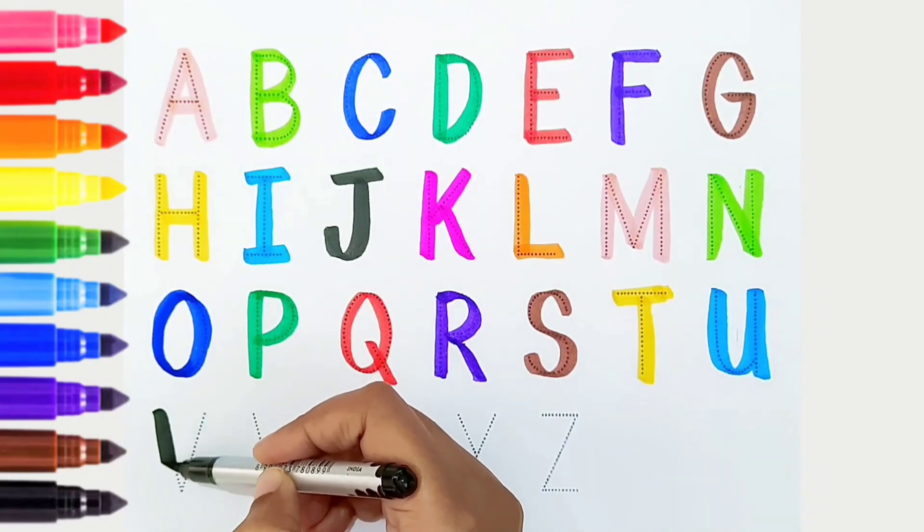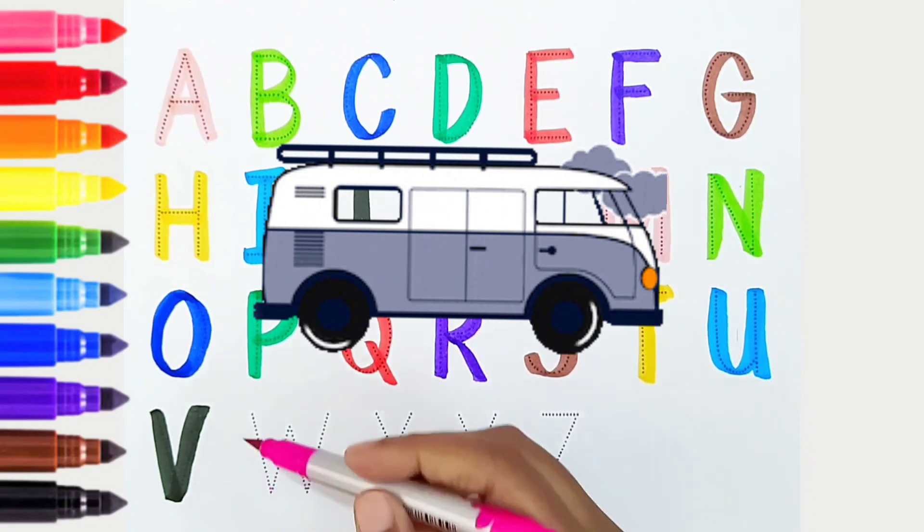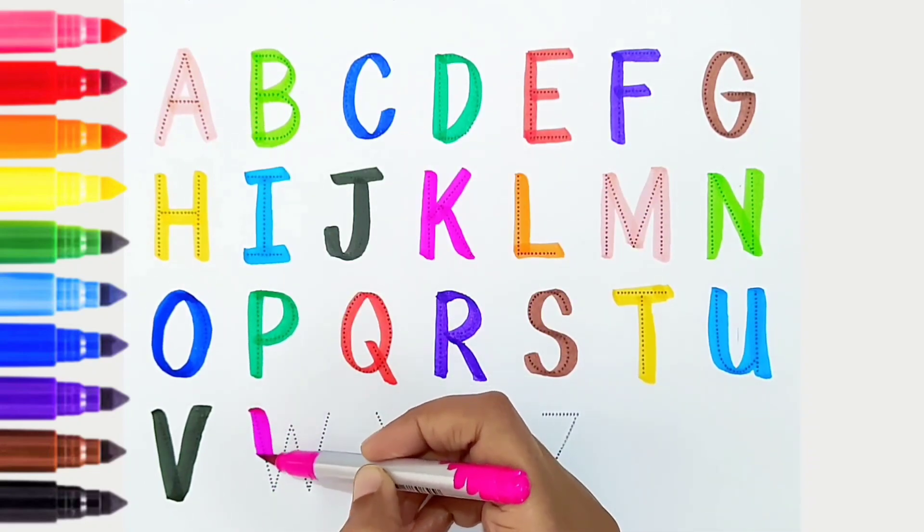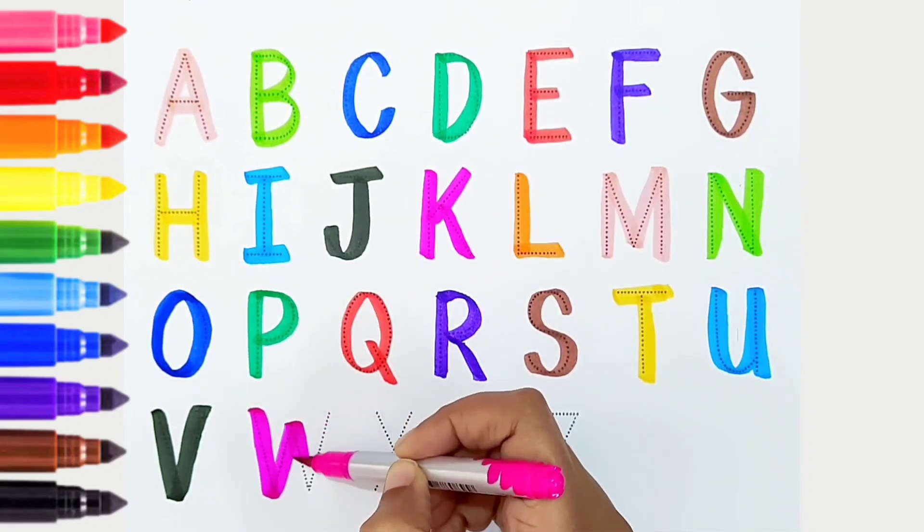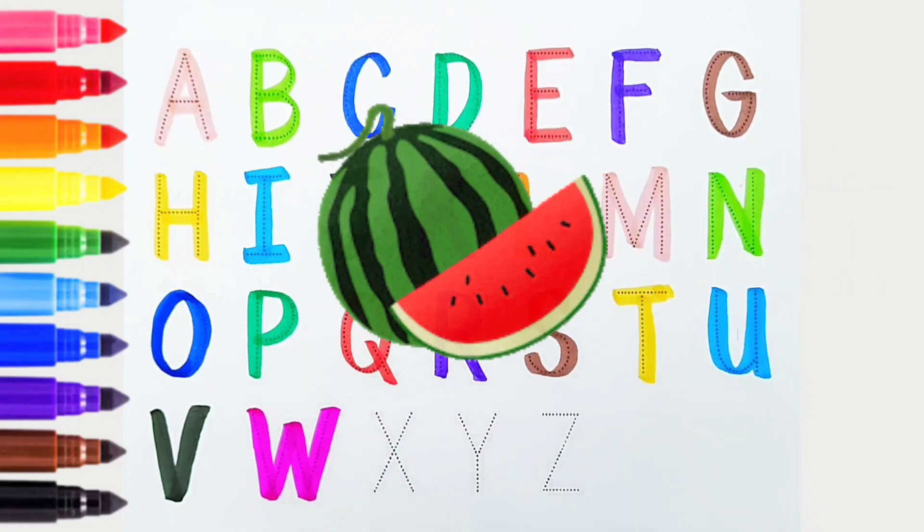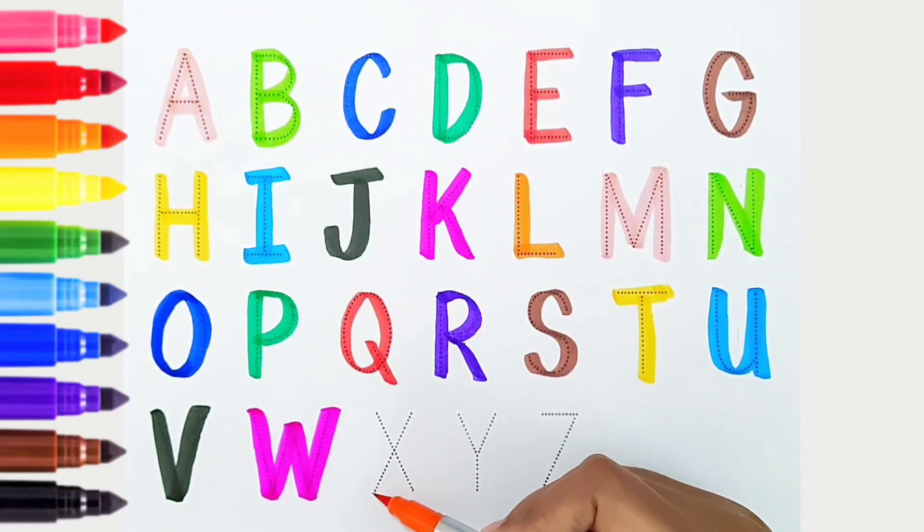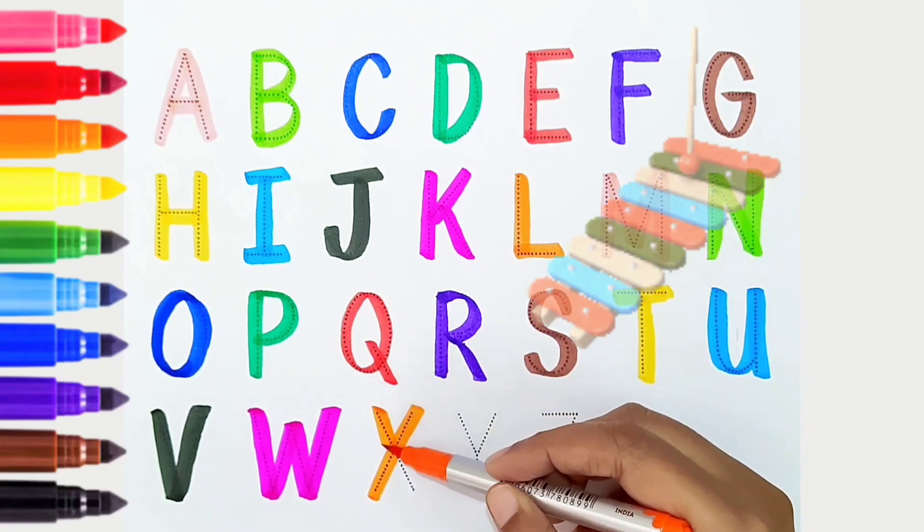V, black color, is for van. W, dark pink color, is for watermelon. X, orange color, is for xylophone.